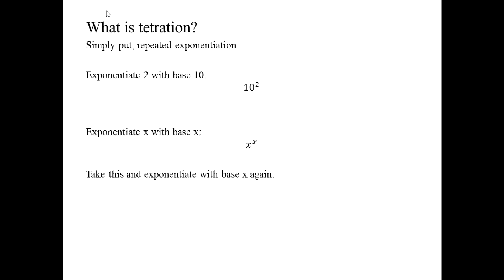If I asked you to exponentiate the number two with a base of ten, that's just ten squared. If I ask you to exponentiate X with a base of X, you put X as both base and exponent. Doing this again, X to the X becomes the exponent with a new base of X, forming a power tower. This three-story tower with three X's can also be written with a superscript 3 next to X — X being tetrated three times.